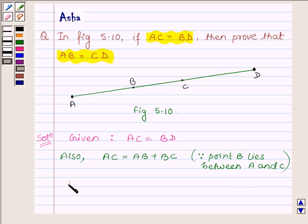Similarly, BD can be written as BC plus CD, since point C lies between B and D.